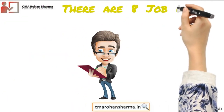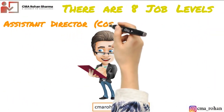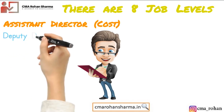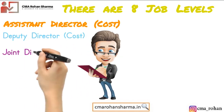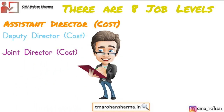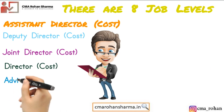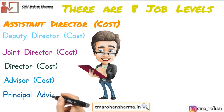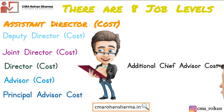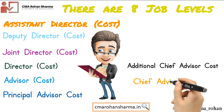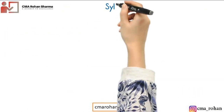There are 8 job levels: Assistant Director Cost, Deputy Director Cost, Joint Director Cost, Director Cost, Advisor Cost, Principal Advisor Cost, Additional Chief Advisor Cost, and Chief Advisor Cost.